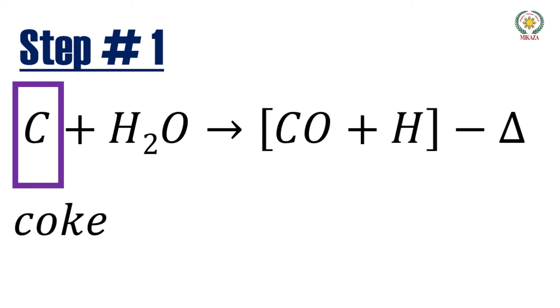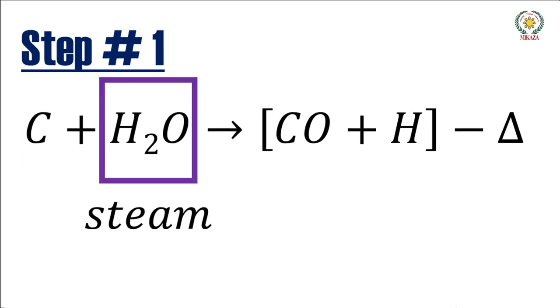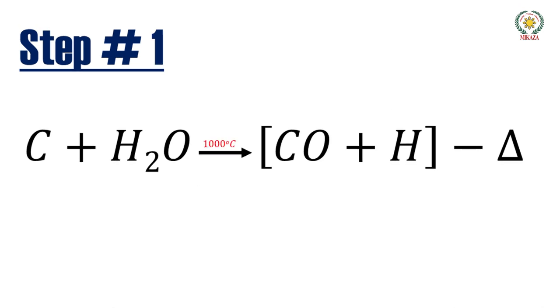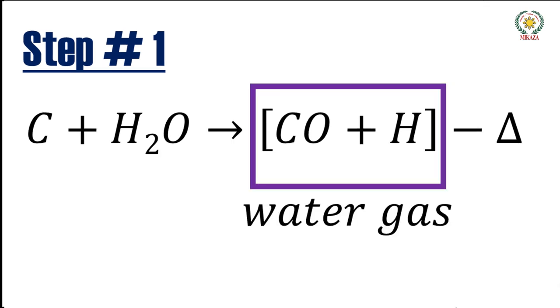If we need carbon, then we have coke which is passed over steam. Steam is nothing but water in the gaseous state. So when steam is passed over coke, a temperature for this reaction required is 1000 degree Celsius. At 1000 degree Celsius, these two react and they form water gas which is a combination of carbon monoxide and hydrogen.